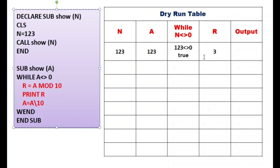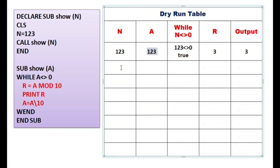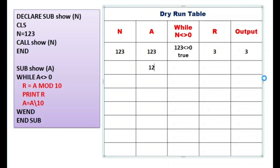Then PRINT R — value of R is 3, so 3 is printed in the output column. Then a = a integer division 10. Integer division by 10 removes the last digit of the number. Removing digit 3 from 123 leaves 12, so the value of a is now 12. The loop then returns to check the while condition again.